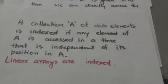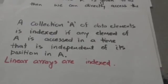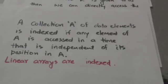A collection A of data elements is indexed if any element of A is accessed in a time that is independent of its position in A. Linear arrays are indexed because any element can be accessed in a time that is independent of its position in the linear array.